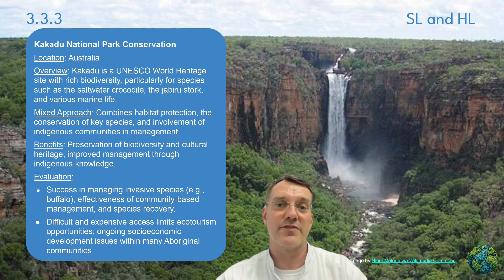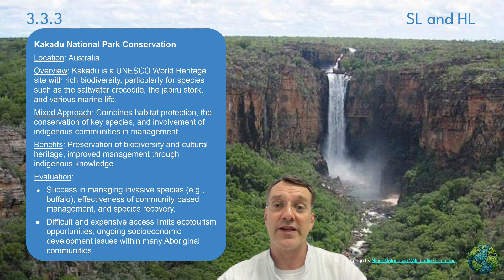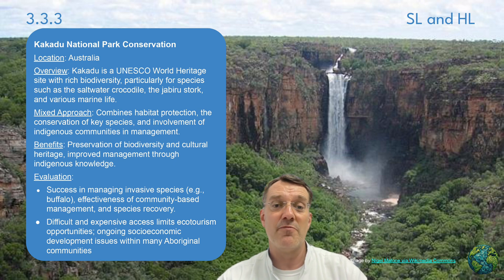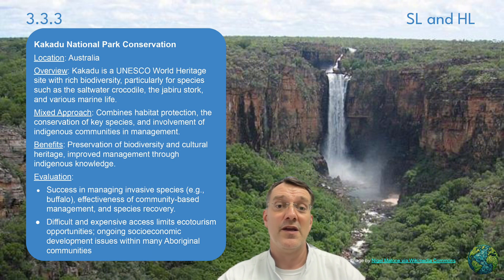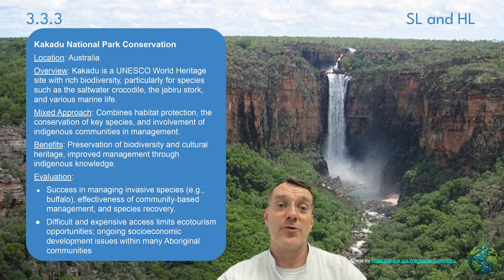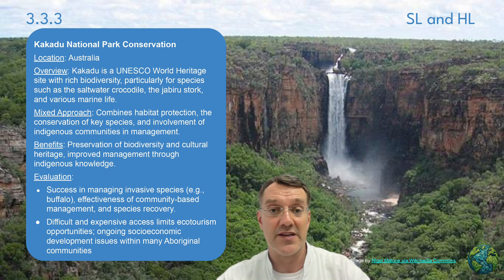Kakadu National Park in Australia, a UNESCO World Heritage Site, provides another example of a mixed approach. It has rich biodiversity including the saltwater crocodile and the Jabiru stork. The approach combines habitat protection, conservation of key species, and involvement of indigenous communities in management. Benefits include preservation of biodiversity and cultural heritage. Successes include managing invasive species like buffalo, though challenges include difficult access limiting ecotourism and socioeconomic issues within aboriginal communities.